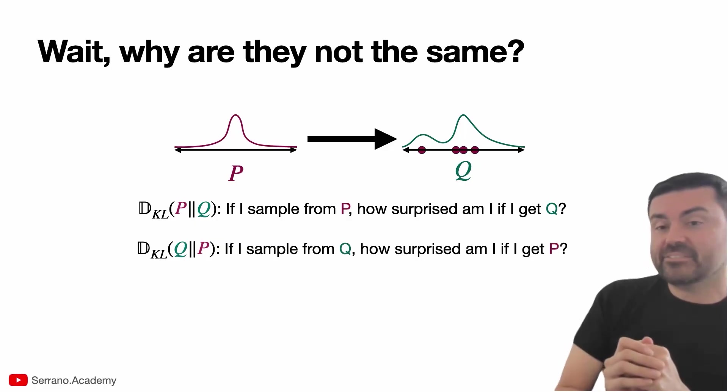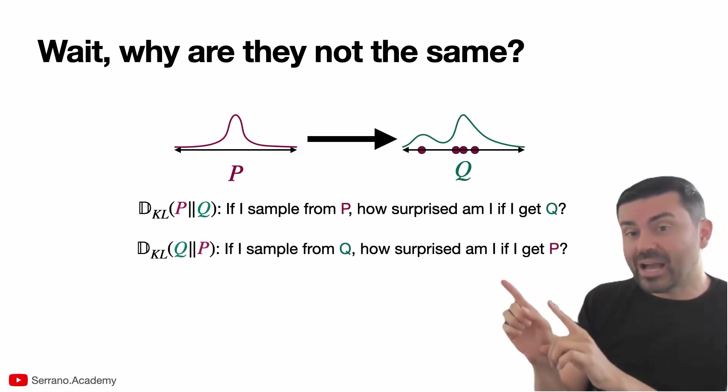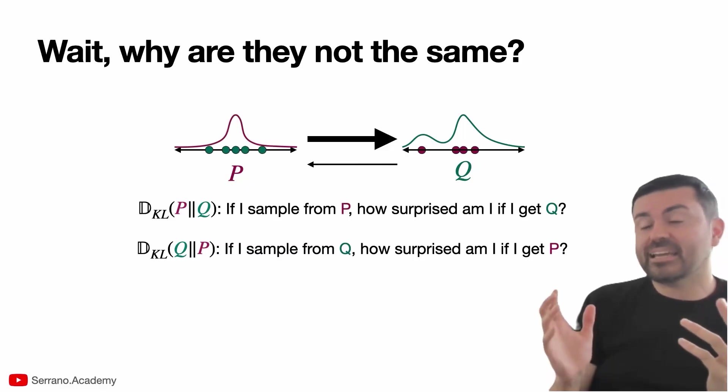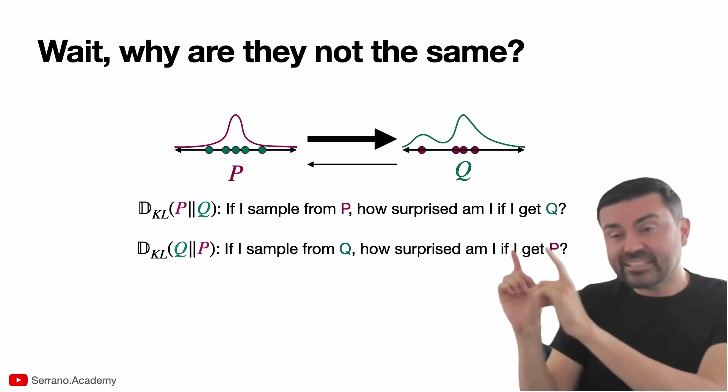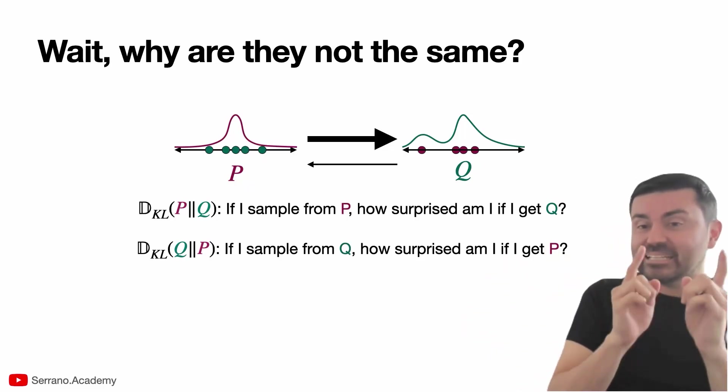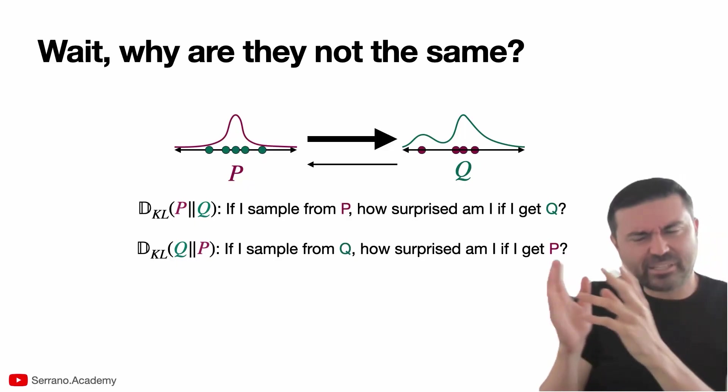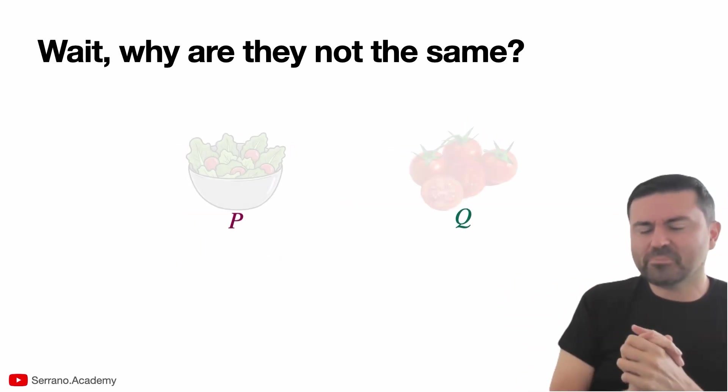Now, if I switch P and Q, then the KL divergence of Q and P says: if I sample from Q, how surprised I am to get P. So basically, if I sample some points in Q and I bring them here, and then I look at the distribution of those points, how surprised I am if I get P. And it could be that I can easily get Q from P, but I cannot easily get P from Q. And that still sounds counterintuitive to me. It seems to me that if you can get P from Q, you can also get Q from P. But let's look at a simple example.